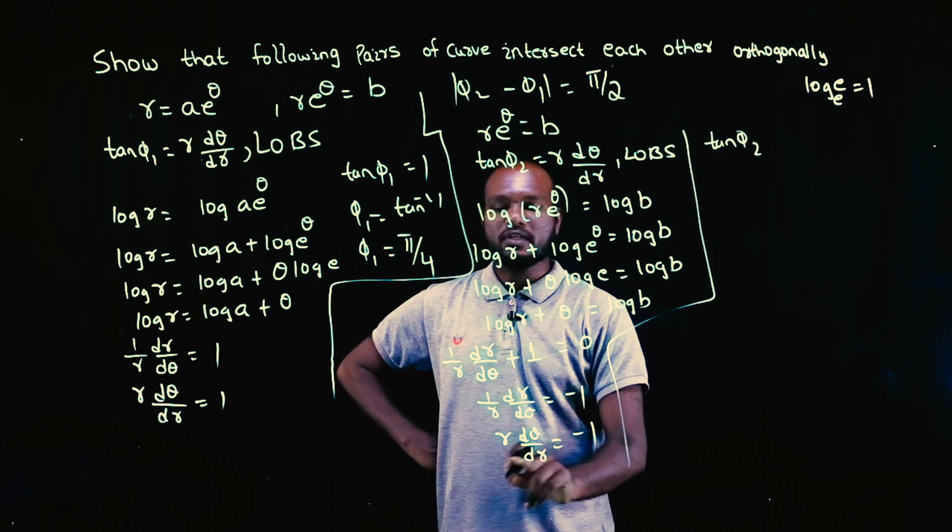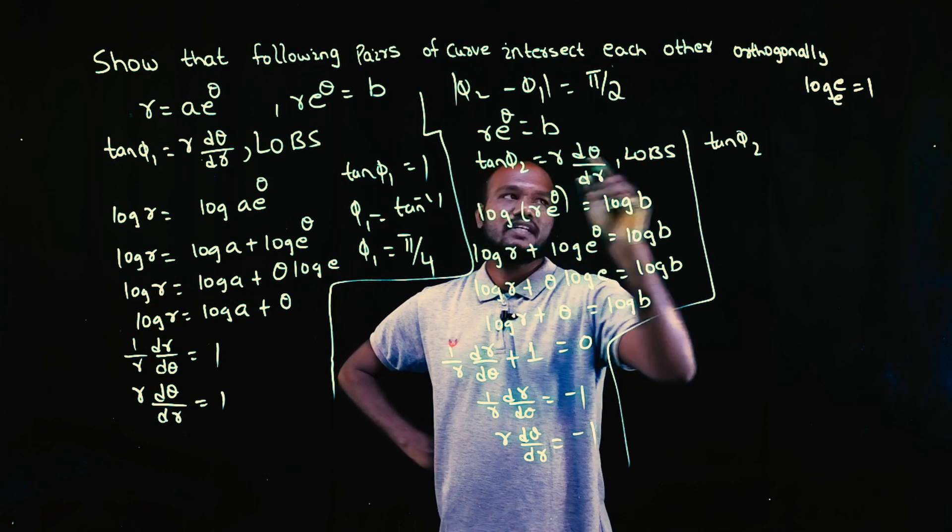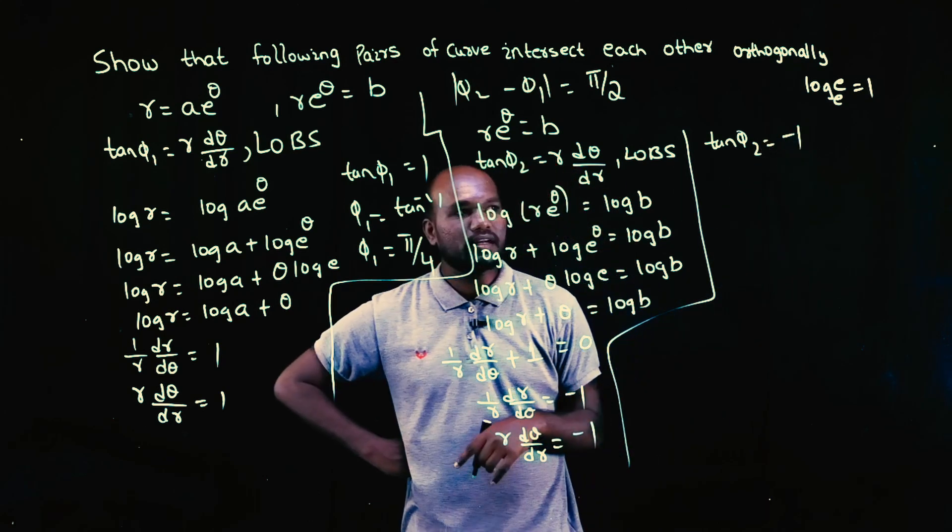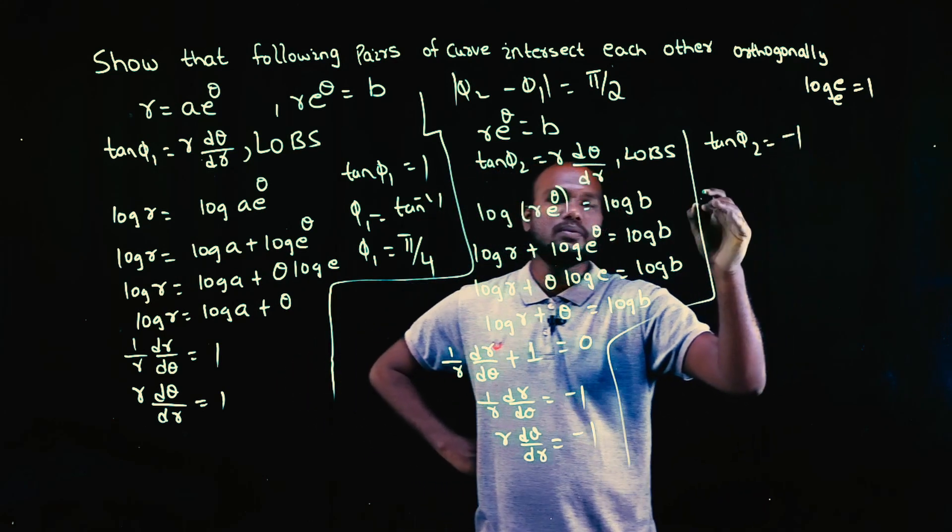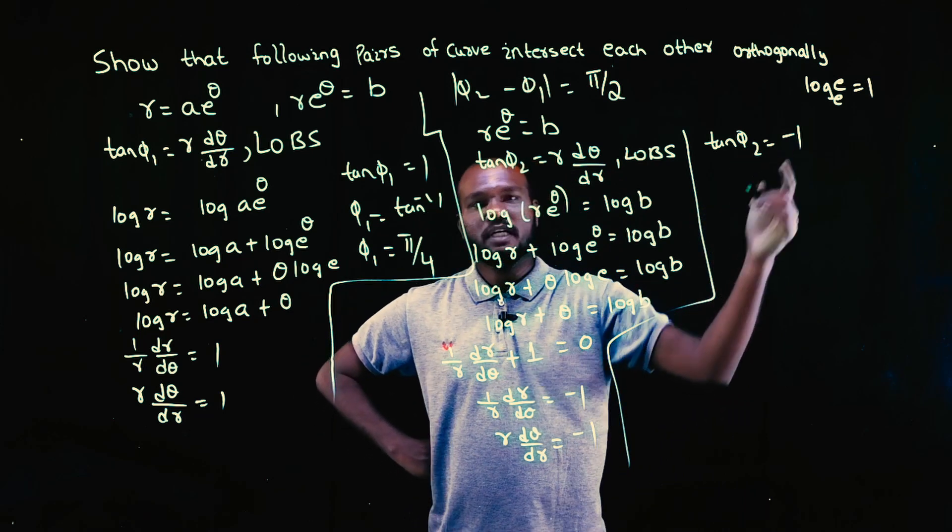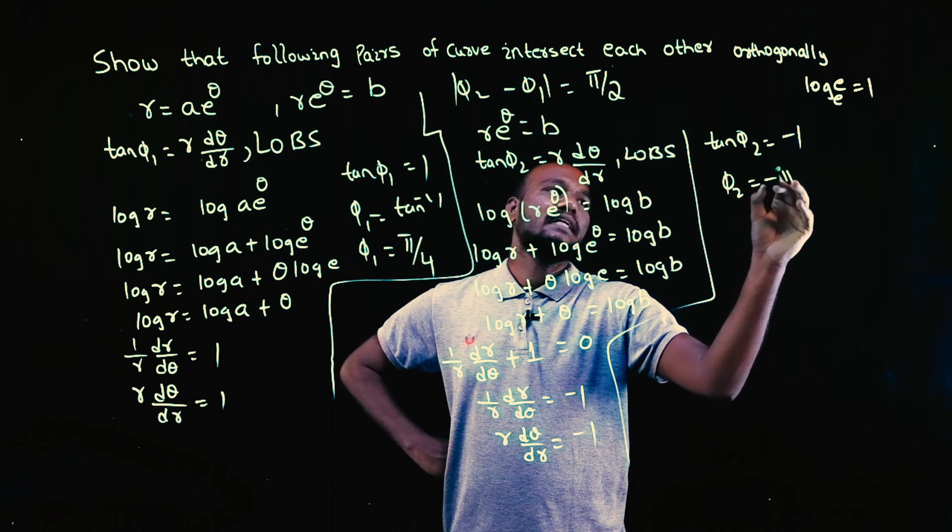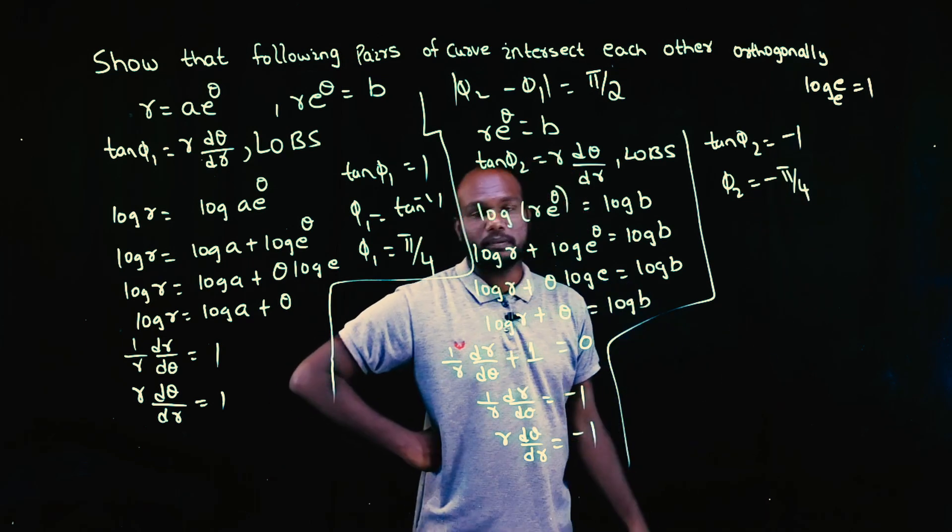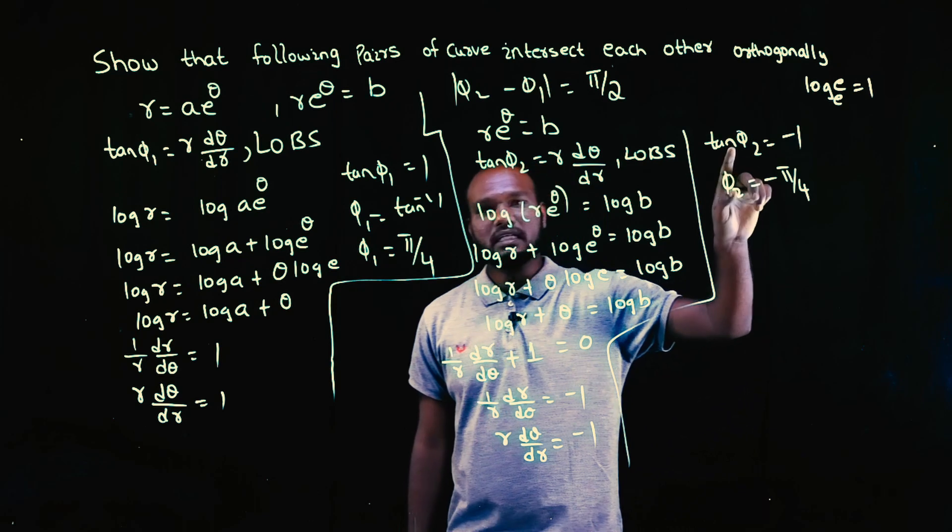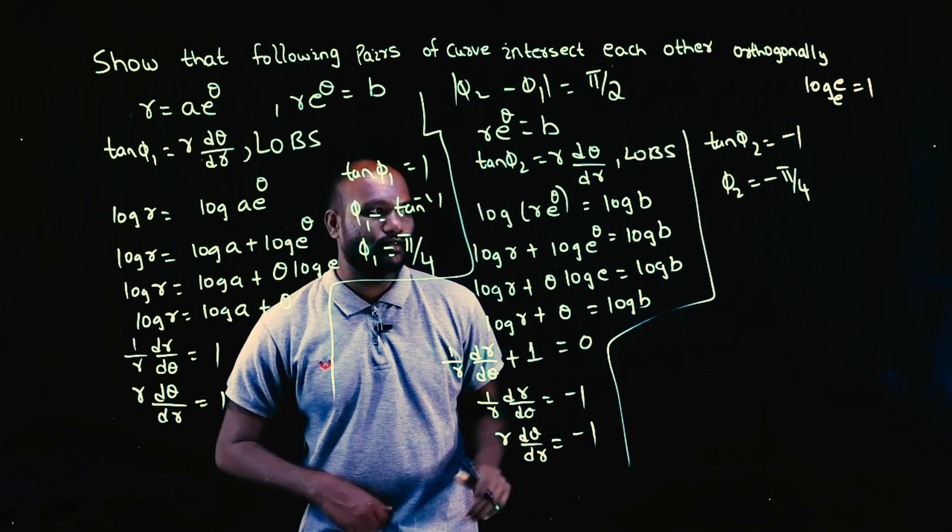Tan phi 2—r times d theta by dr—r times d theta by dr is tan phi 2, is equal to minus 1. For what value does tan phi become negative? For what value of tan phi become negative? For minus pi by 2. So phi 2 equal to minus pi by 4. Sorry, not pi by 2, minus pi by 4. If you substitute minus pi by 4, tan of minus theta is minus tan theta, so minus pi by 4.